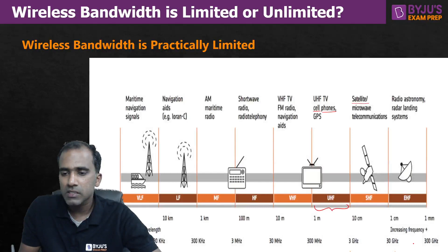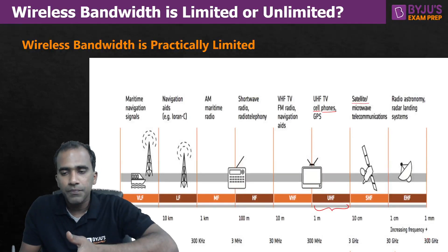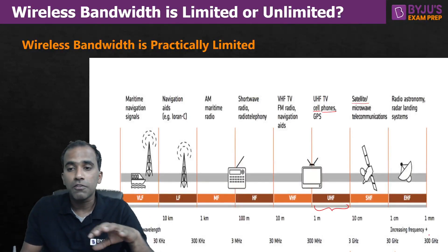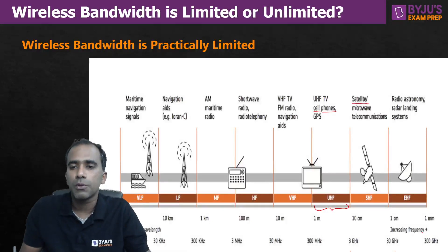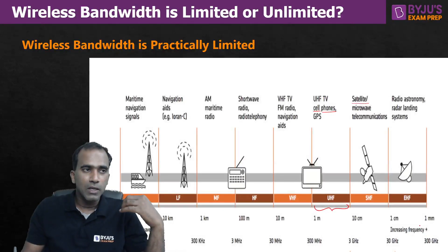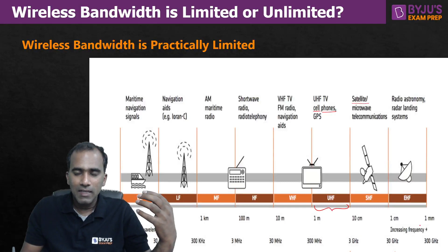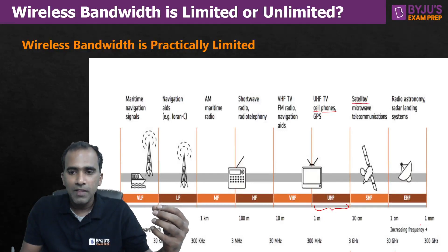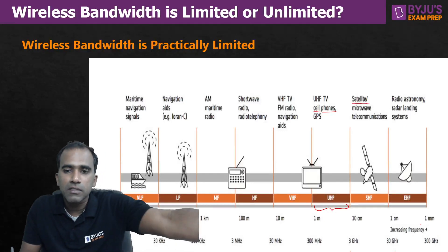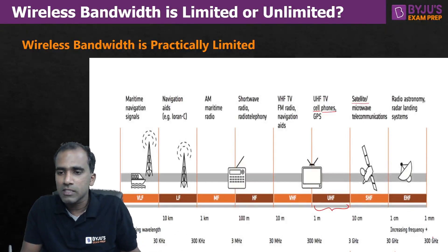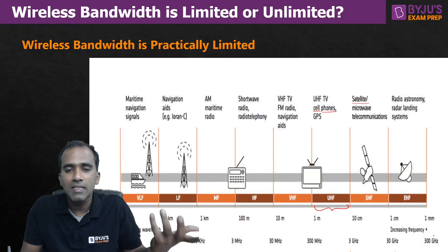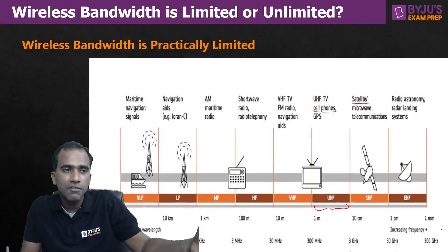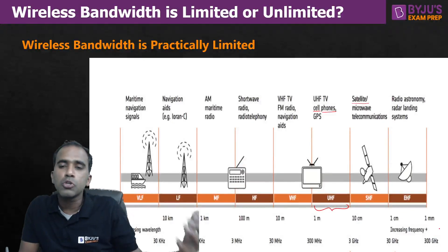Frequencies in the range of 300 GHz or more face enormous attenuation from the atmosphere, which means a decent amount of transmitted power will not survive after a certain number of kilometers. Sometimes, if you transmit at terahertz frequencies, there will be huge signal losses after just a few meters.